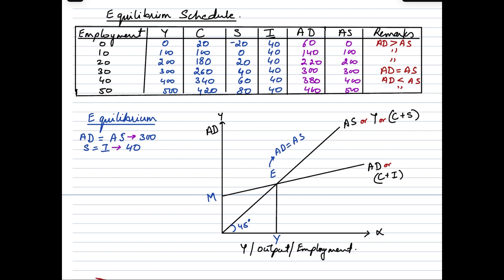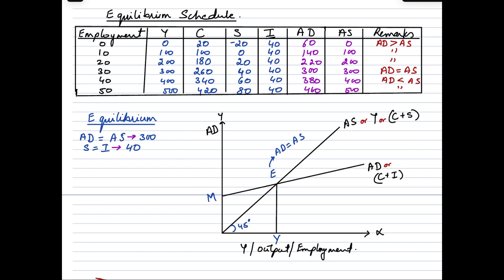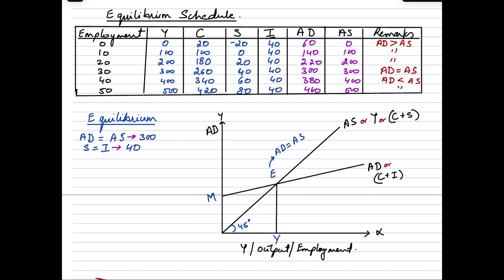To the left of point E, AD is greater than AS, indicating an inflationary gap. This means people are willing to buy more than what is available in the economy, leading to shortages in the markets. These shortages can cause scarcity and may lead to black markets or grey markets. To overcome this, the government may implement contractionary fiscal policies and the central bank may implement monetary policies, aiming to bring demand down so it can be equated with aggregate supply and equilibrium restored.